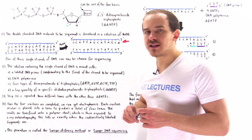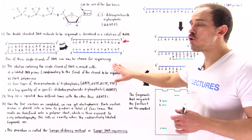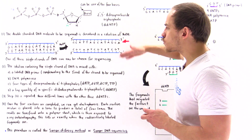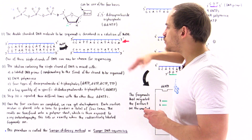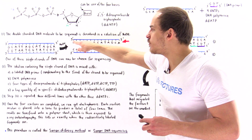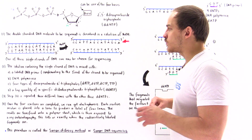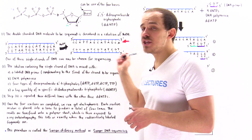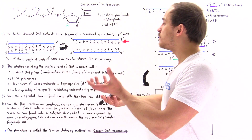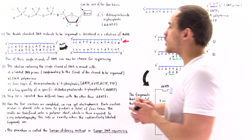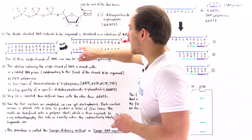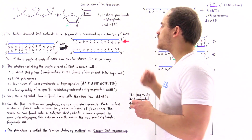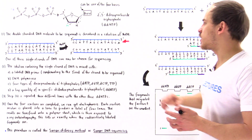One of these single strands can be chosen for the sequencing process. It doesn't matter which one we choose, because once we determine the sequence of one strand, we can easily determine the sequence of the other strand, since these two strands are complementary — G base pairs with C, and A base pairs with T. So once we know this sequence, we know the other by the base pairing process.